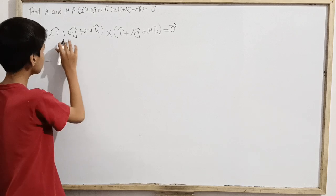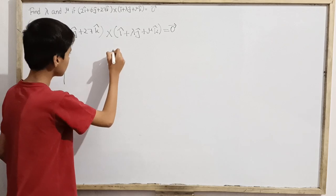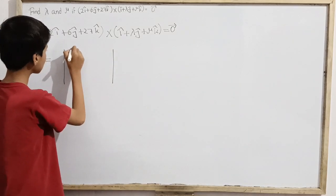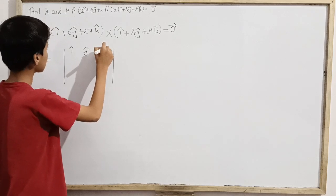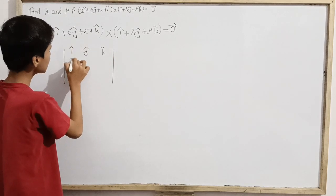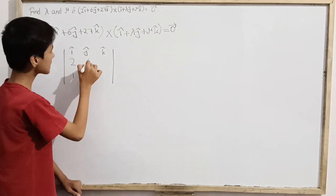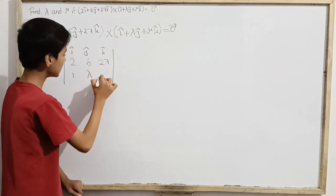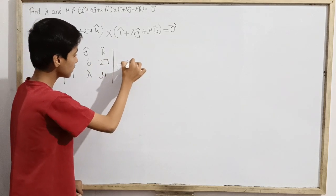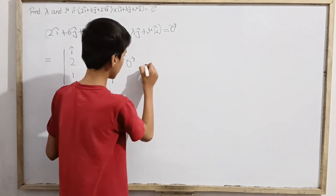Like if I express these vectors in determinant form, I will do something like this. I cap, J cap, and here comes the K cap. In I cap, in the first vector, that's a 2 and in another that's a 1. After that, 6 and lambda, and then comes 27 and then mu. This is actually a zero vector, a null vector. This determinant is a null vector.